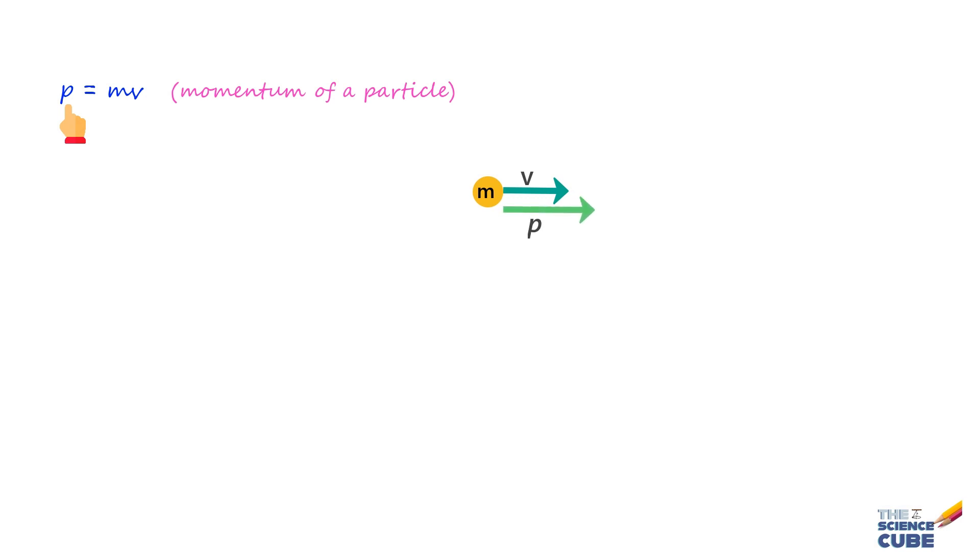Now, if you differentiate both sides with respect to time, what you get is dP/dt equals M dV/dt. This simplifies beautifully if you write dV/dt as acceleration A, or dP/dt equals MA. But then, MA is the net force acting on a mass.